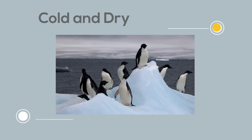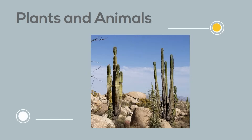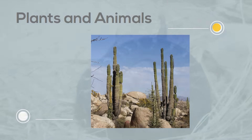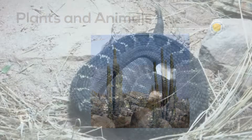Plants and animals that live in deserts must have adaptations that help them survive with little rainfall and extreme temperatures. You may find cactus and shrubs, lizards and snakes.